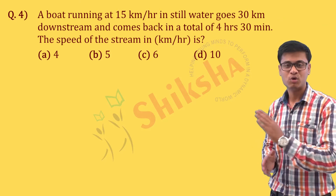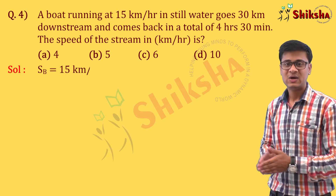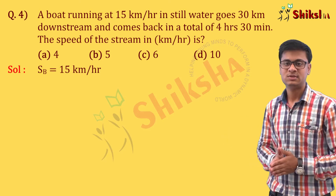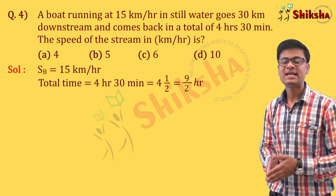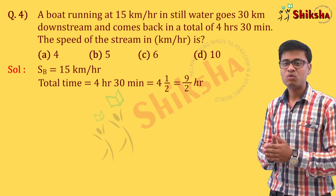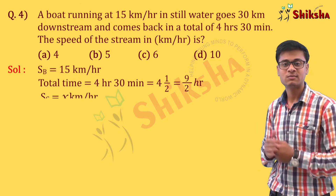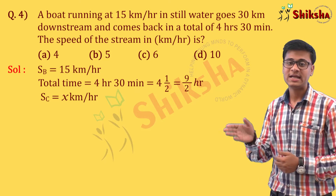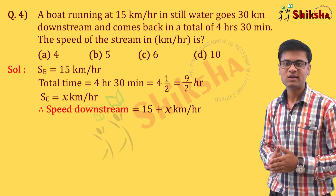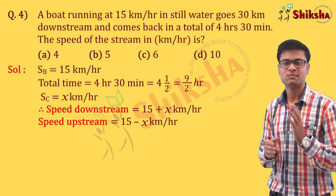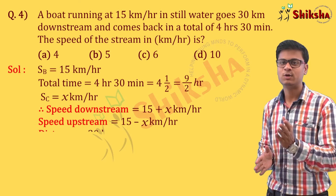The speed of the boat is given as S_B = 15 km per hour. The total time given is 4 hours 30 minutes, which we write as 9/2 hours. We consider the speed of the stream as x km per hour. So our downstream speed will be (15 + x) km per hour and our upstream speed will be (15 − x) km per hour. The distance is 30 km, and distance divided by speed equals time.